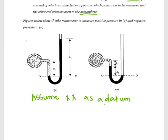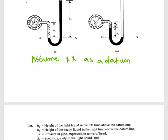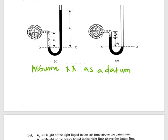Let us assume XX as a datum. We must know that pressures at two points which are at the same level in a homogeneous liquid are the same. So, for example, pressure at X — that is, P_XX in the left limb — is equal to P_XX in the right limb.